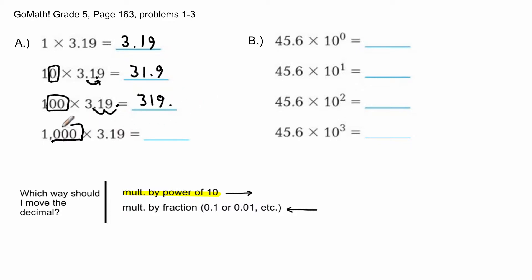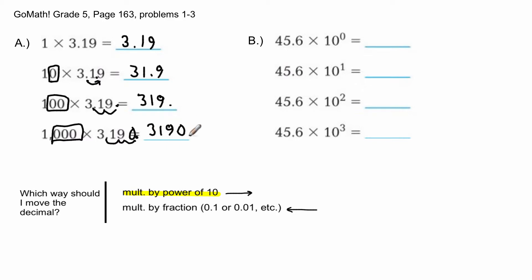For 3.19 × 1000, there are three zeros — three powers of ten — so I move the decimal three spaces to the right: one, two, three. There's an empty spot, so I put a zero there. The result is 3190 with the decimal point at the end. You can leave the decimal point off a whole number, but I'm including it here to show the pattern.